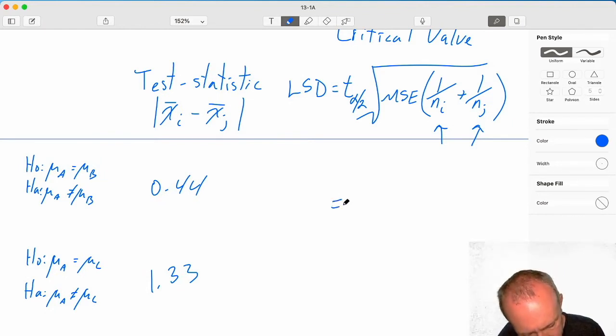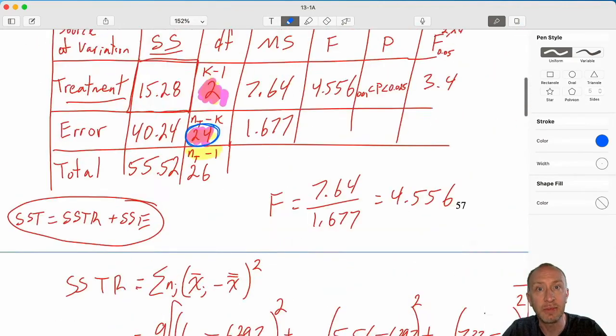Now, our LSD, we need that critical t, alpha divided by 2. First question of course, what are our degrees of freedom? Degrees of freedom always corresponds with the estimate of variance. Our estimate of variance here is MSE. So what are the degrees of freedom for MSE?